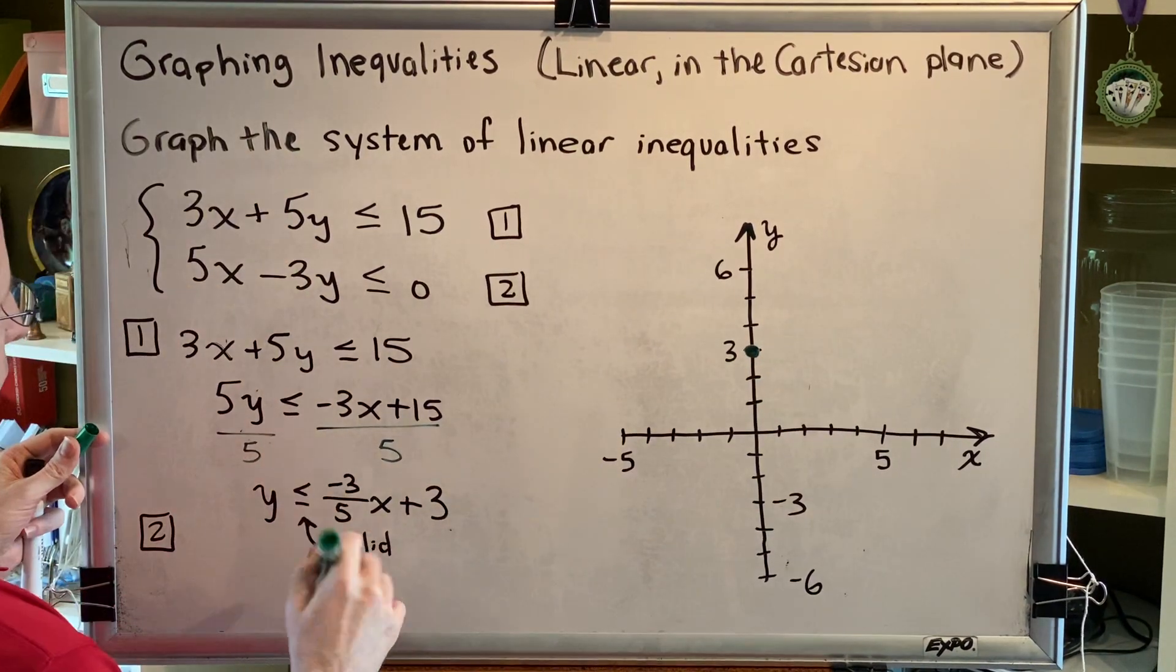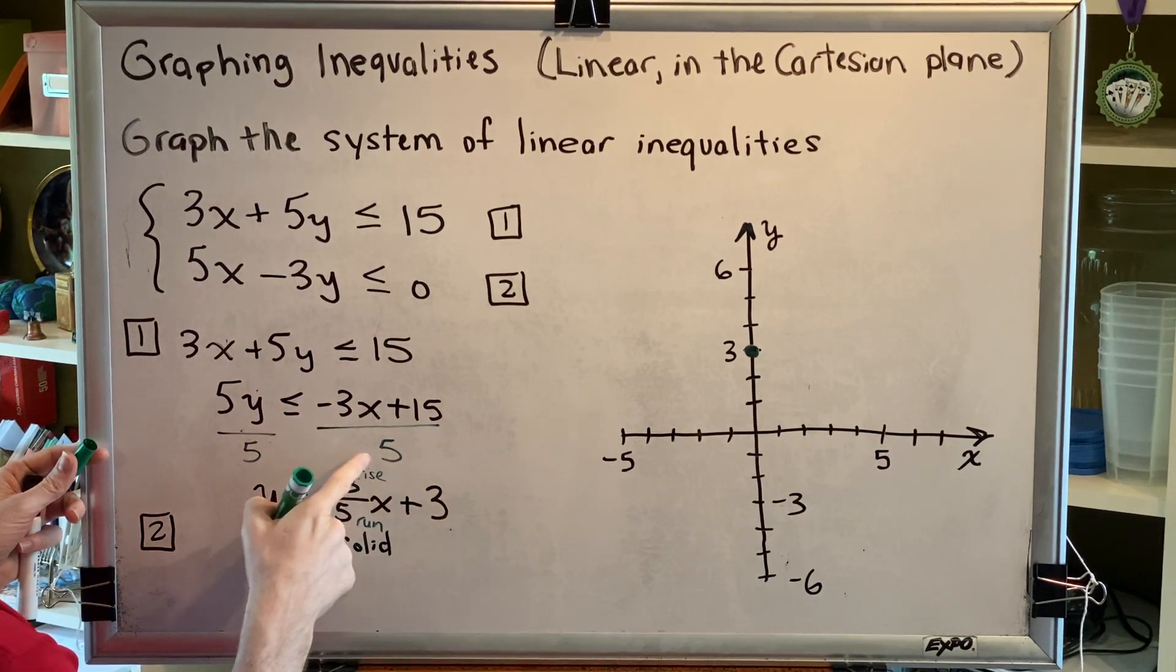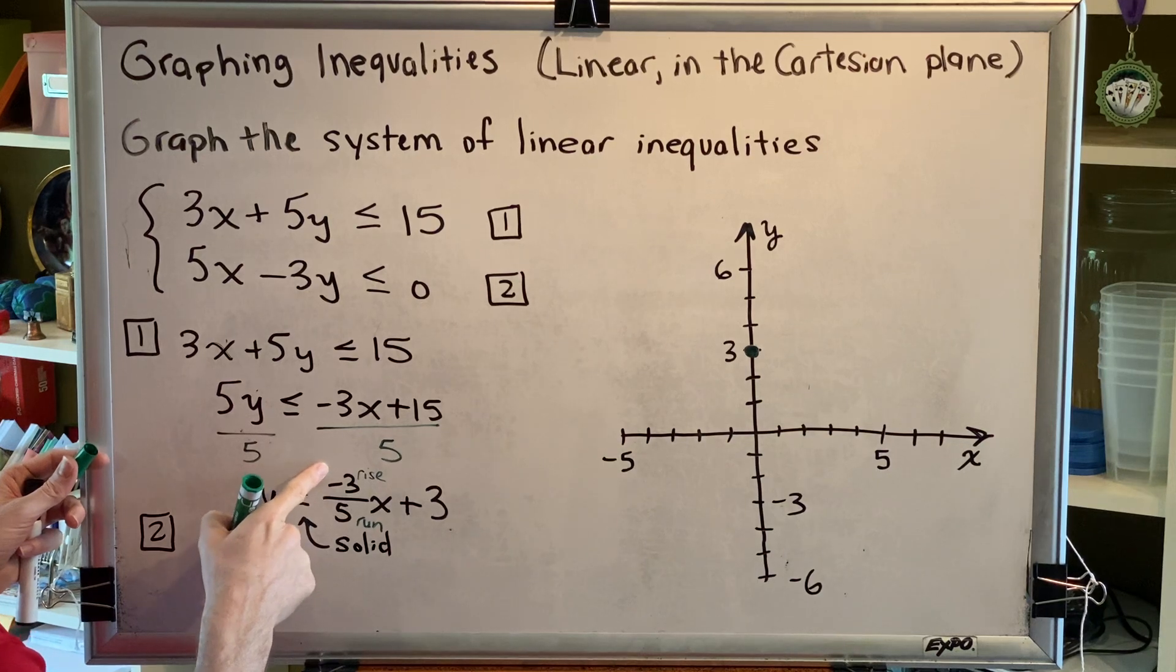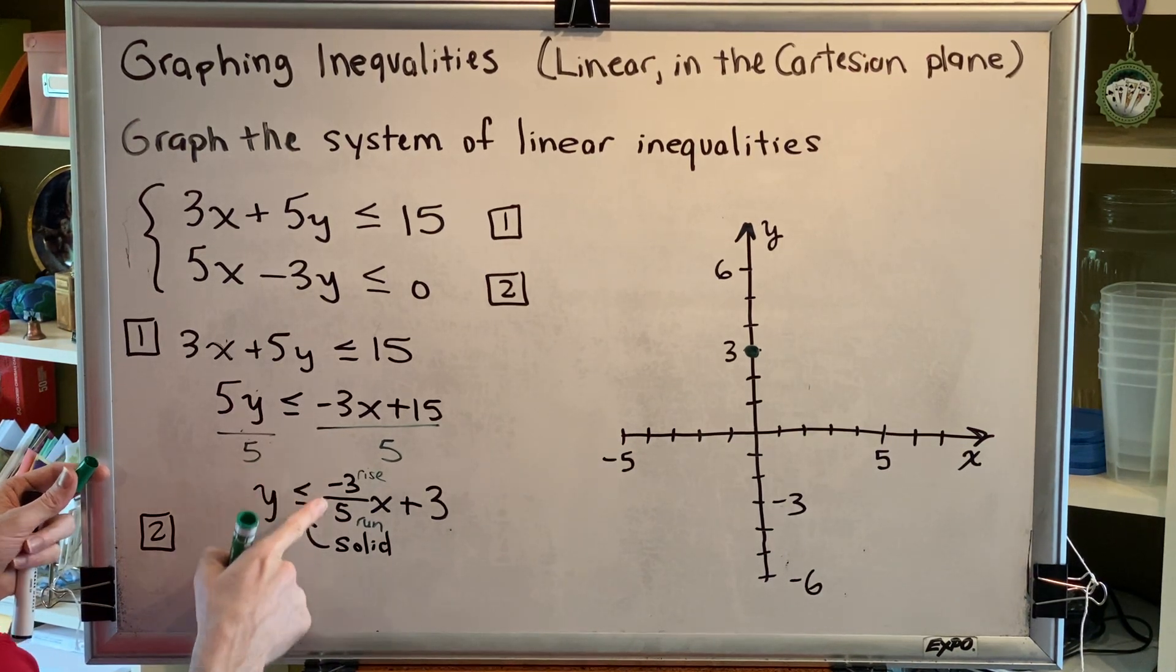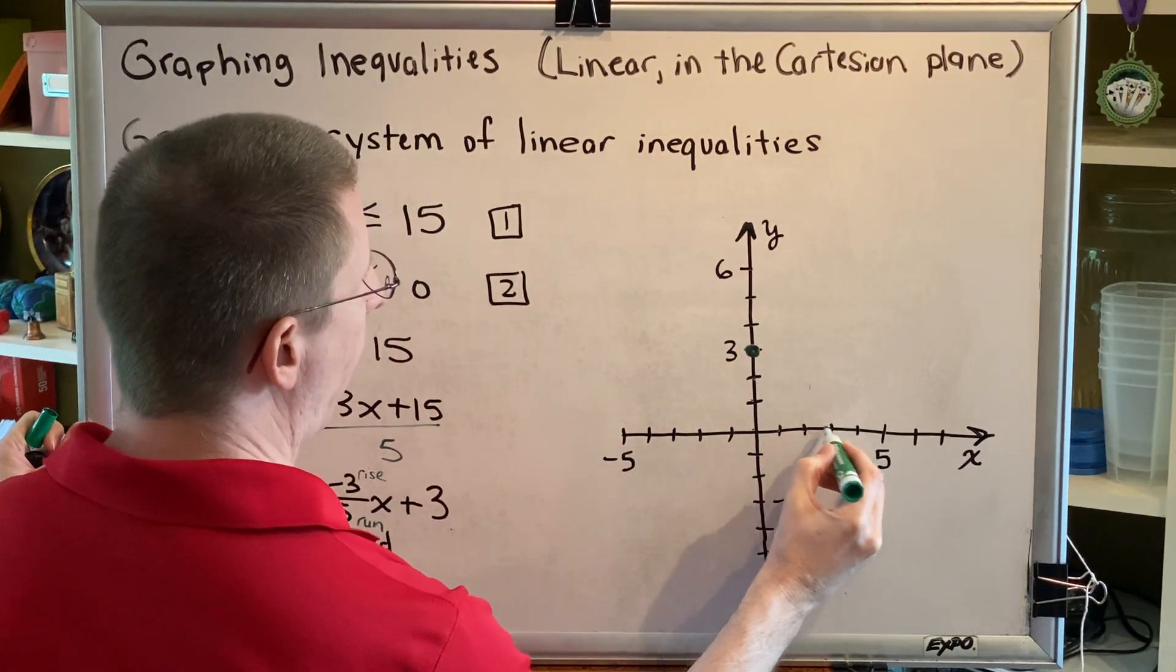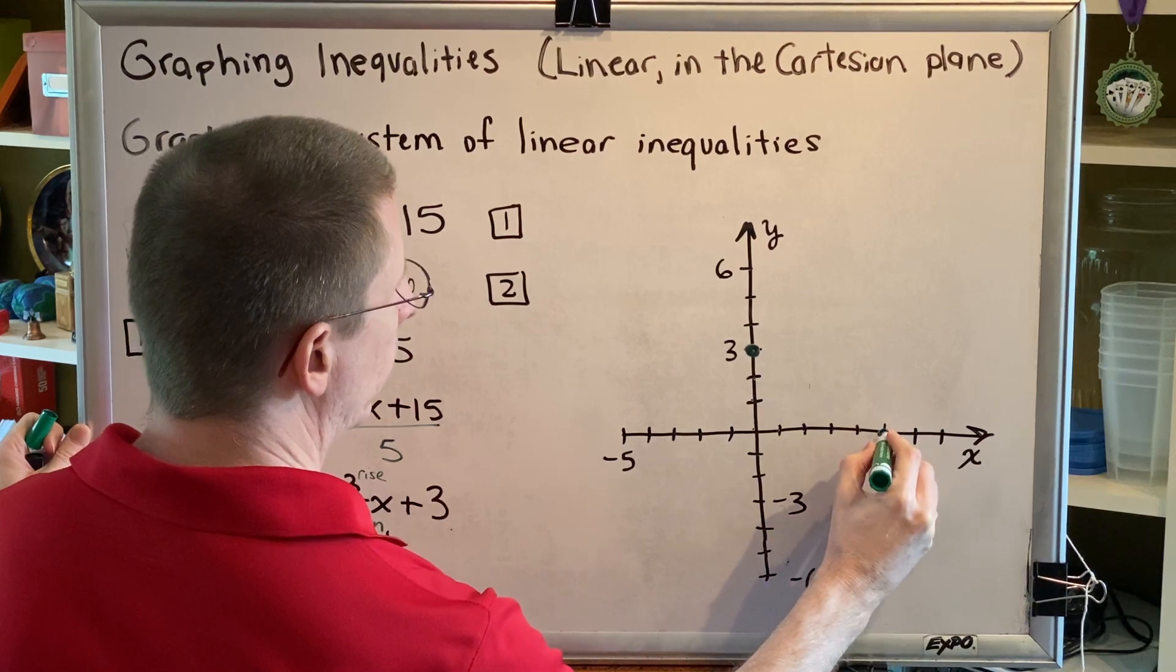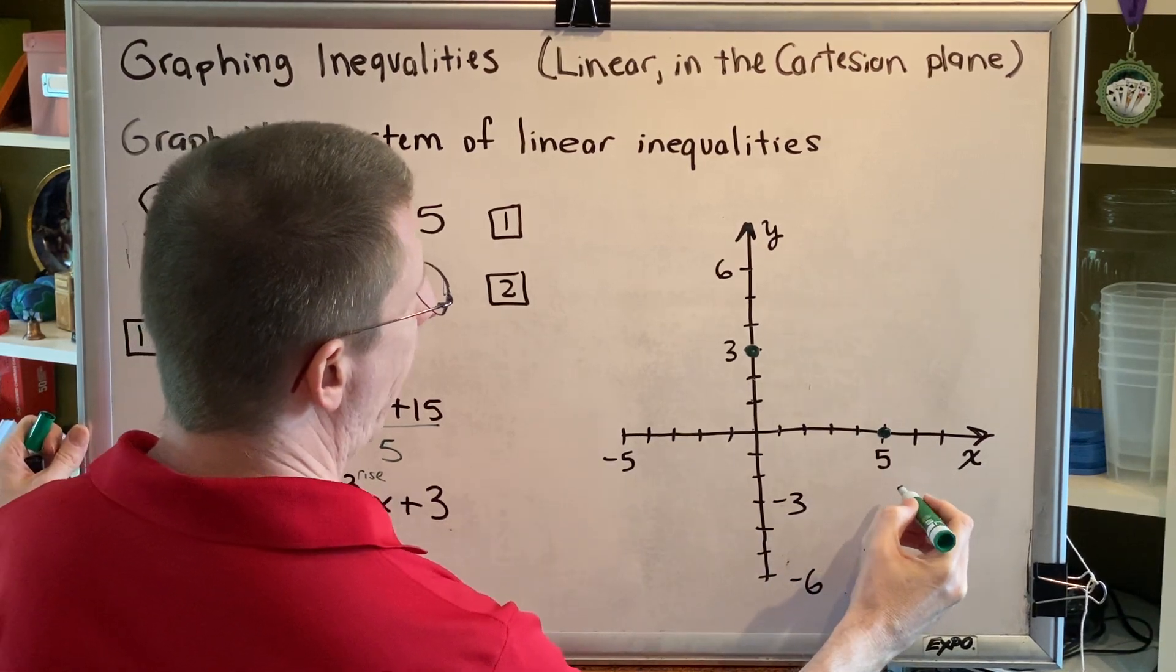The slope is negative 3/5, which is our rise over run. Rising negative 3 is going down 3, and running 5 is going to the right 5. From the intercept we go down 3 and right 5. We want to do this until we run out of room.